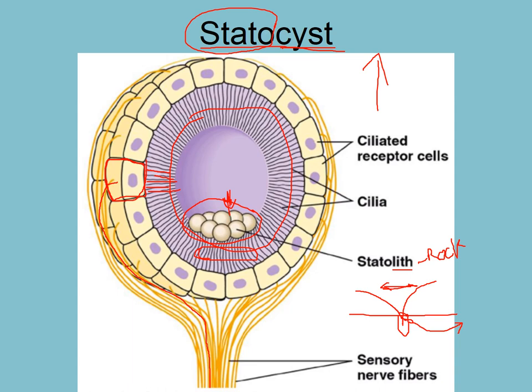So what happens if the jellyfish turns upside down and starts swimming towards the bottom? Those statoliths will now be at the top, stimulating those hairs, and that tells the jellyfish to start pumping on one side and not the other until it turns itself. The statoliths will roll back down to the point where the jellyfish knows it's oriented the correct way, and it will then start swimming back up towards the surface. These are called statocysts.